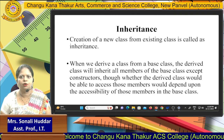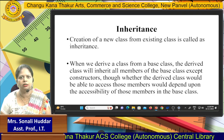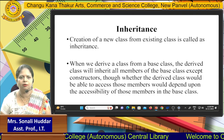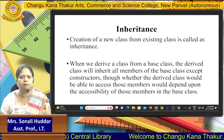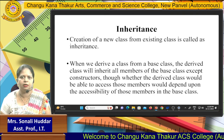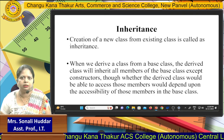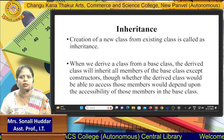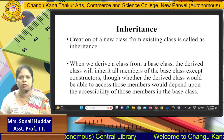When you derive a class from a base class, the derived class will inherit all members of the base class except the constructors. So if a constructor exists in the base class, it cannot be derived. Along with that, all other members are going to be inherited. However, if members are declared as private in the base class, those private members cannot be accessed in the derived class.